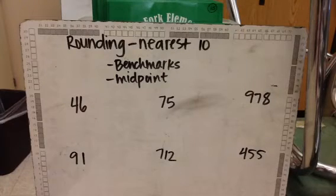So we start with our benchmarks, which are the two tens that the number is between, and then the midpoint is that middle spot in between the benchmarks. You'll notice something over and over again: when we're rounding to the nearest ten, the midpoint is going to end in five every time because our range is ten and five is right in the middle.